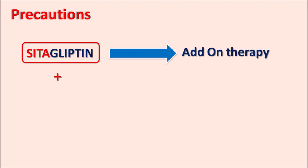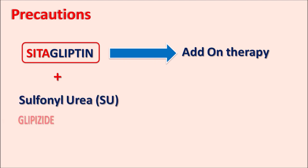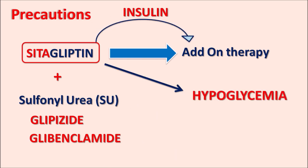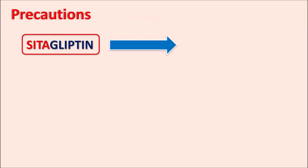Another important precaution relates to combination therapy. Cetagliptin can be combined with sulfonylureas such as glipizide or glibenclamide, or with insulin preparations. In such combinations, both cetagliptin and sulfonylureas can increase the risk of hypoglycemia, potentially producing severe hypoglycemia. Any symptoms of hypoglycemia should be thoroughly monitored when cetagliptin is used in combination therapy.